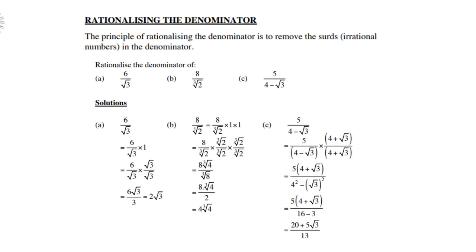Rationalizing the denominator: the principle of rationalizing the denominator is to remove the surd in the denominator, so that surd, of course, is irrational. Let's look at three examples. Look at A first: 6 divided by square root 3.